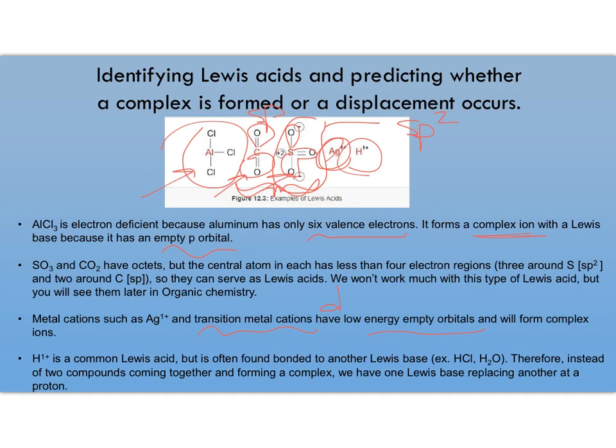And again, hydrogen ion is kind of off on its own because we don't see it in nature on its own—it's virtually always bonded to some other Lewis base. So instead of making a complex when hydrogen ion is the Lewis acid, we have a situation where one Lewis base is attacking the hydrogen ion and kicking out or replacing or displacing another Lewis base.